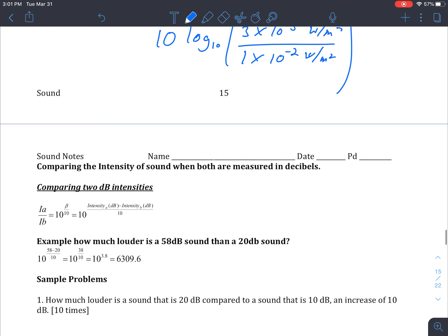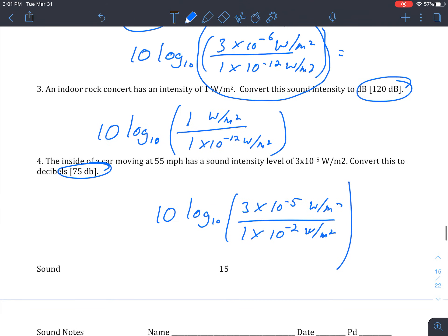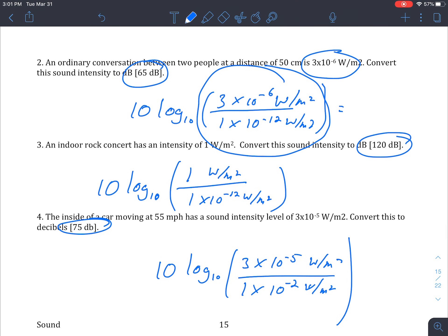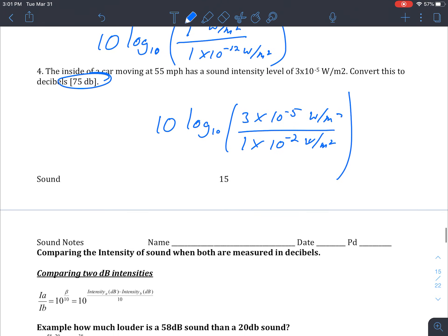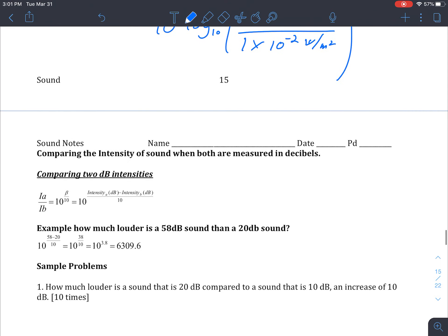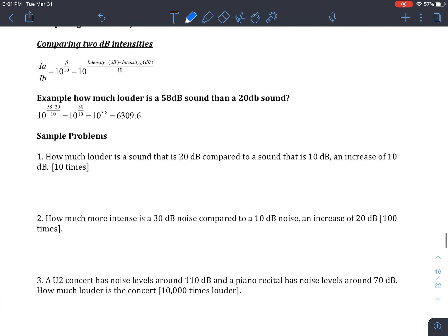But I believe you have done this in pre-calc or maybe even algebra too. So page 15 was just going from intensities in a linear scale, watts per meter squared, just the overall amount of matter being vibrated, and going into decibels, that other logarithmic scale.